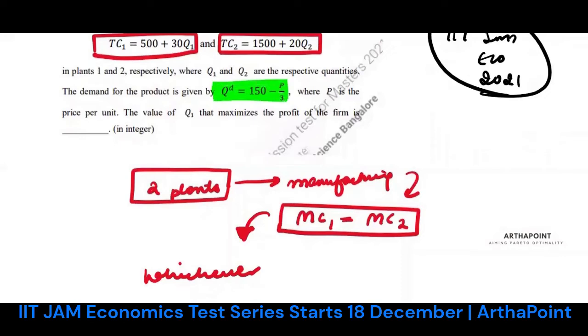Then, whichever plant has lower marginal cost, you would be using that plant for the purpose of production. You don't even need what the demand function is or any other information.